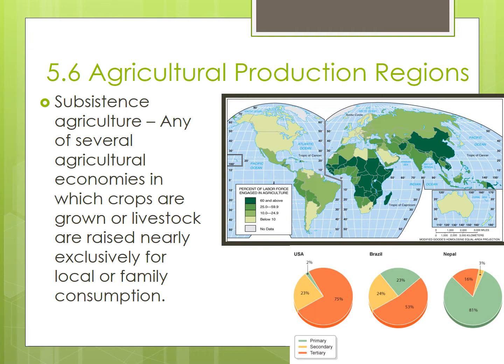Let's begin with subsistence agriculture, which is any of several agricultural economies in which crops are grown or livestock are raised nearly exclusively for local or family consumption. Essentially, subsistence agriculture is when the people who are growing the food are the ones who eat the food that is grown. Within subsistence agricultural systems, production is fairly minimal and it is not intended for sale at market or to make a profit. It is meant to feed the family.